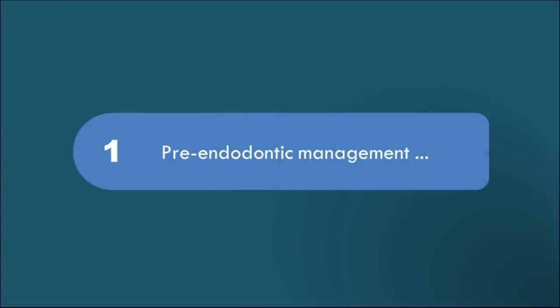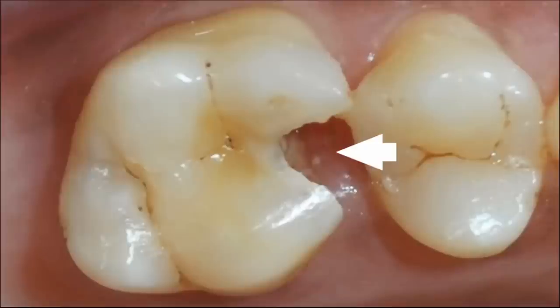We all think after anesthetizing the tooth, we can prepare access cavity immediately. There exists one more important step before access cavity preparation called as pre-endodontic management. Many problems associated with root canal treatment can be prevented if we could do this single step. Often this is neglected or omitted by most of the dentists. Let's see what it is and why to do it. In this clinical picture, we can see a deep proximal caries in maxillary first molar. If we are doing an access preparation directly in this tooth, isolation is impossible.